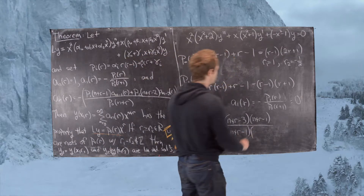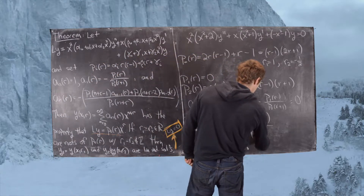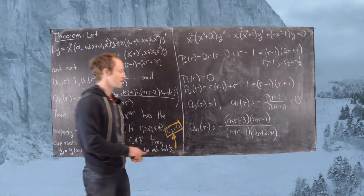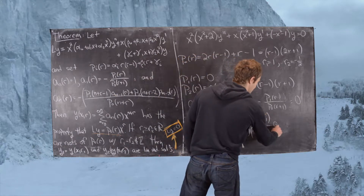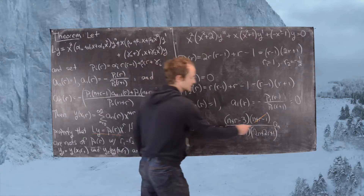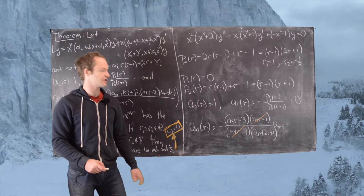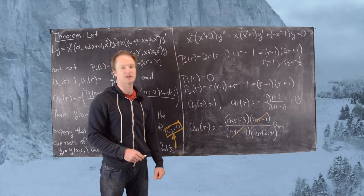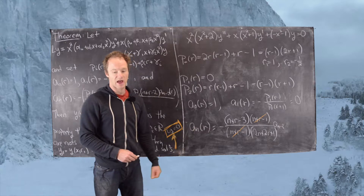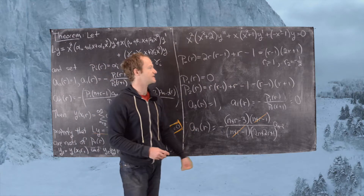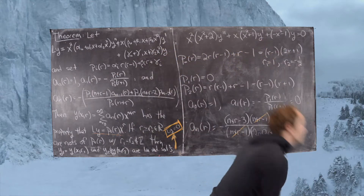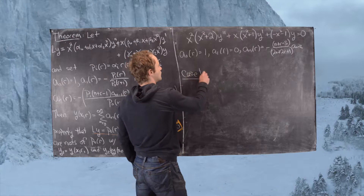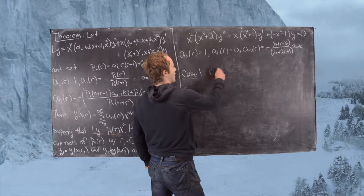After cancellation, the recursion simplifies to a_n(R) = −(n + R − 3) / (2n + 2R + 1) times a_{n−2}. So a_n depends only on a_{n−2}, giving us a two-step recursion. Now I'll clean up the board and look at the specific roots. For the first case, R1 = 1.